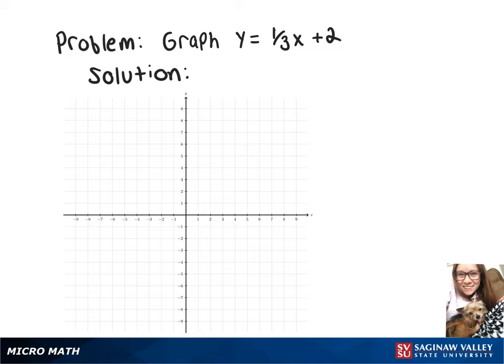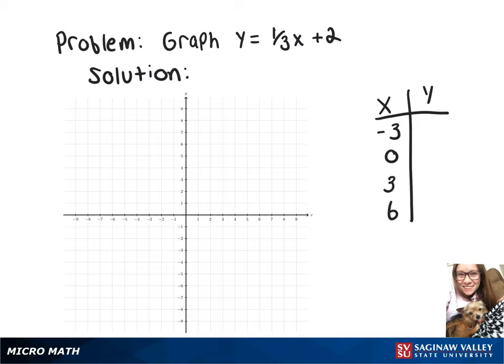To graph y equals 1/3 x plus 2, we're going to plot some points. So let's make an x-y table over here. We can choose x values, so let's do negative 3, 0, 3, 6, and 9.